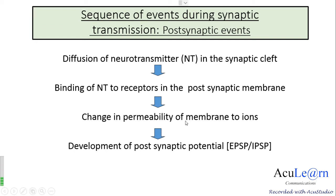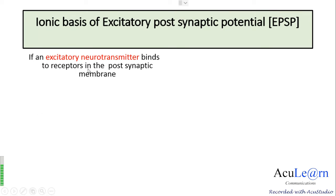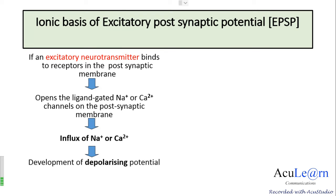This would cause the development of the post-synaptic potential — either EPSP or IPSP — depending upon which ion the membrane becomes permeable to. Coming to the ionic basis of the excitatory post-synaptic potential: EPSP is produced by excitatory neurotransmitters. When an excitatory neurotransmitter binds to receptors in the post-synaptic membrane, it causes the opening of ligand-gated sodium or ligand-gated calcium channels. This causes influx of sodium or calcium into the cell from the extracellular fluid, causing depolarization of the membrane and development of a depolarizing potential.